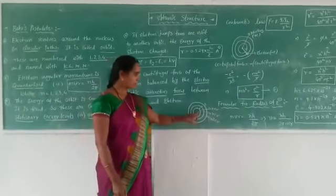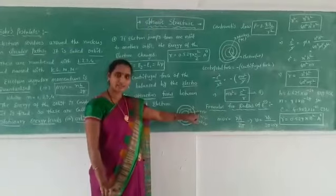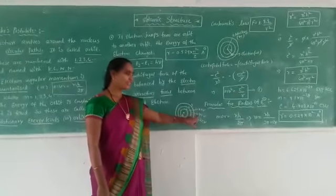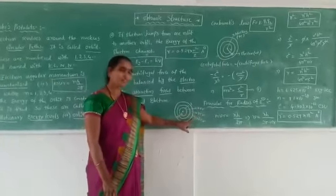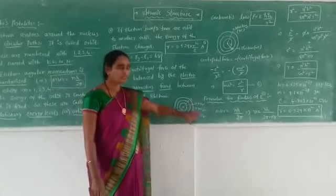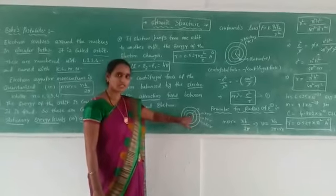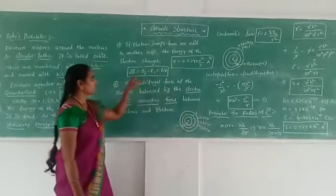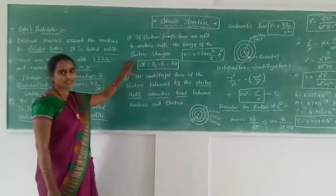The electron jumps from lower energy level to higher energy level or higher to lower energy level — in that case only, energy transformation takes place. Otherwise they are fixed. For example, if the first orbit energy is x electron volts, it is x electron volts only — not greater than x or less than x. For the second orbit it is y, and for the third orbit the energy is z electron volts. The change in energy, delta E, equals E2 minus E1, which equals hν. This is the formula for energy transformation.